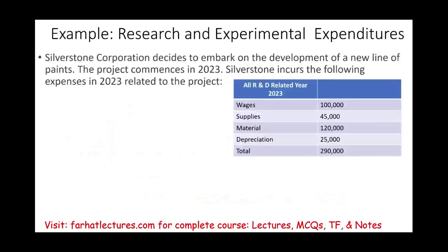Let's look at an example. Silverstone decided to embark on the development of a new line of paints. The project commenced in 2023, and the company incurred the following expenditure — wages, supplies, materials, and depreciation, all R&D-related — totaling $290,000.